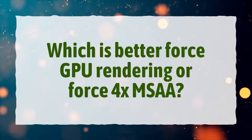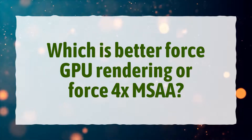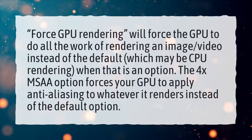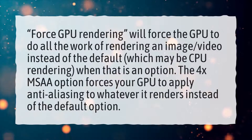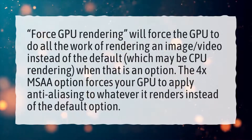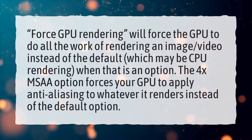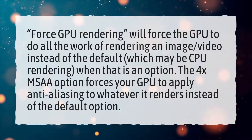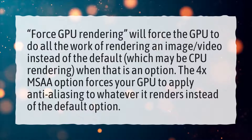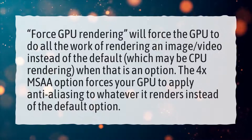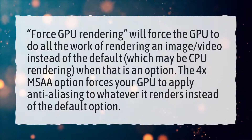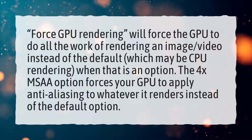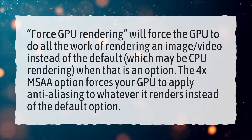Which is better, force GPU rendering or force 4xMSAA? Force GPU rendering will force the GPU to do all the work of rendering an image or video instead of the default, which may be CPU rendering. The 4xMSAA option forces your GPU to apply anti-aliasing to whatever it renders instead of the default option.